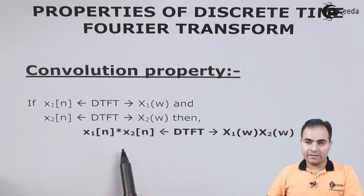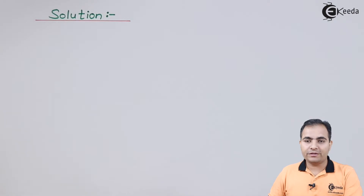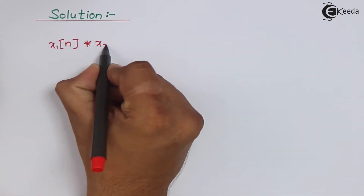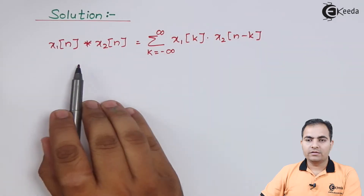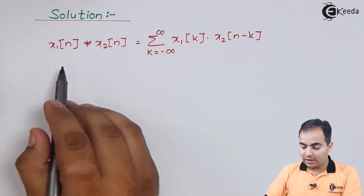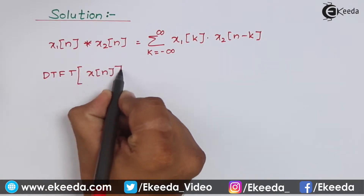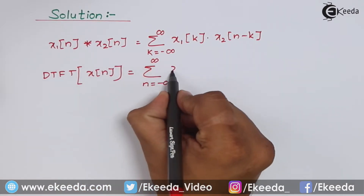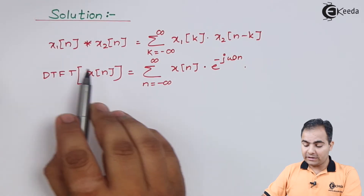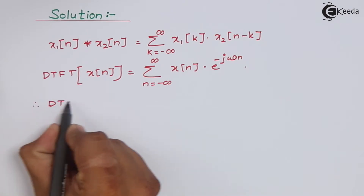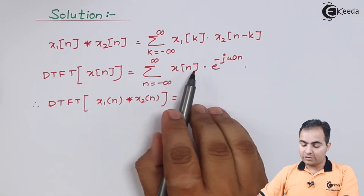We are going to prove this statement. First, we will write the definition of convolution. Then we will write the definition of DTFT. Here I am considering the input x(n) to be x1(n) convolved with x2(n), so x(n) is replaced by that convolution.